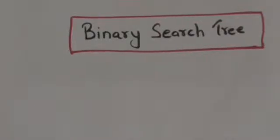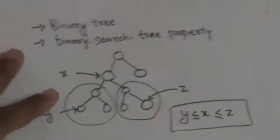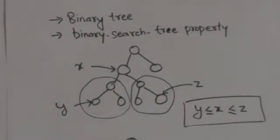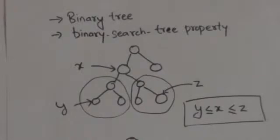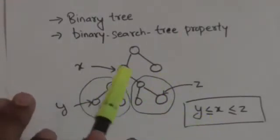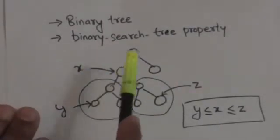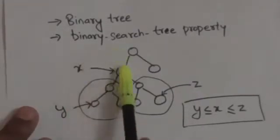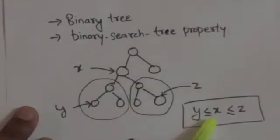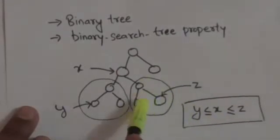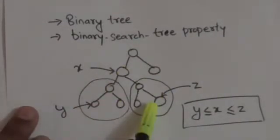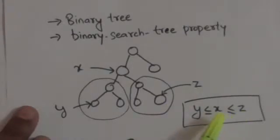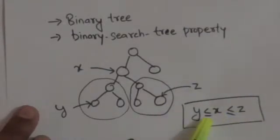Welcome back. In this tutorial we will study about binary search trees. A binary search tree is a binary tree whose each node satisfies the BST property. According to the BST property, for a node x, if there is a node y in the left subtree of node x then the value stored in node y must be less than or equal to the value stored in node x. And for any node z in the right subtree of node x, the value stored in node z must be greater than or equal to the value stored in node x.